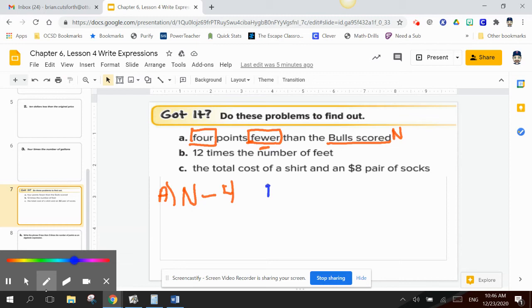So we've got letter B. Twelve times the number of feet. Twelve times the number of feet. Well, how many feet do we have? We don't know. That's my variable. Twelve times. Times tells me to multiply. And we're going to multiply by 12. So to write my expression for letter B is going to be 12 times W or 12W.